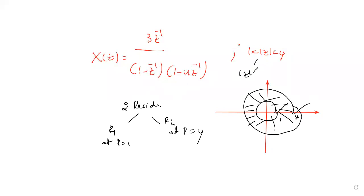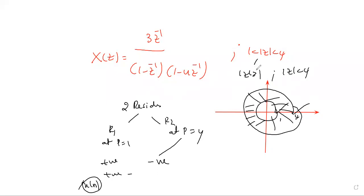For mod Z greater than 1 — corresponding to pole value 1 — the residue is taken as positive. For mod Z less than 4 — corresponding to pole value 4 — the residue is taken as negative. So we add plus the residue at pole 1 and minus the residue at pole 4 to get X of n. This is about Cauchy's integral theorem. Try to solve this problem; refer to at least one more problem based on this. Any doubts, we will discuss in the next class.